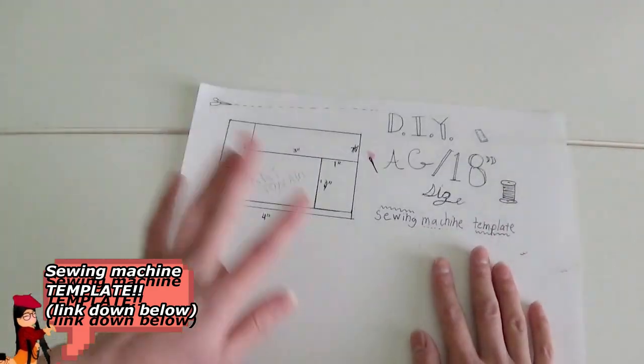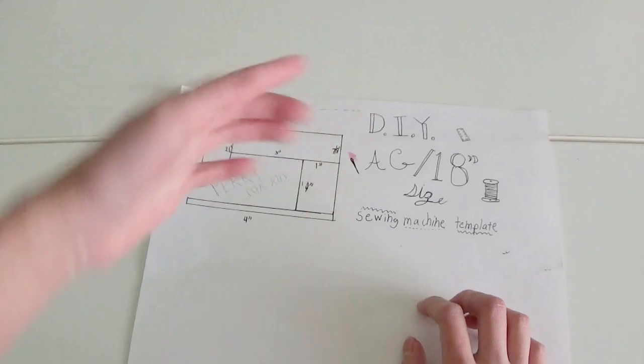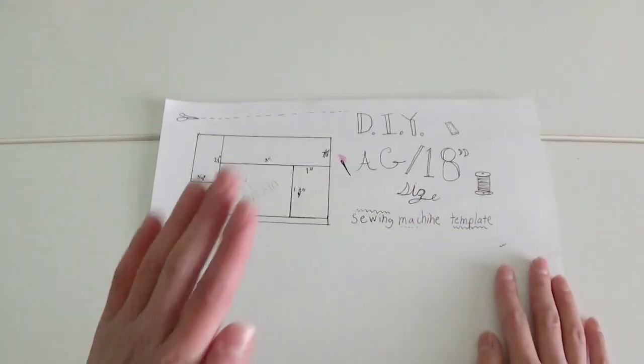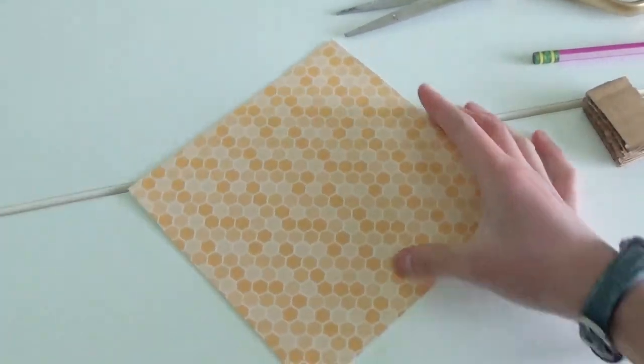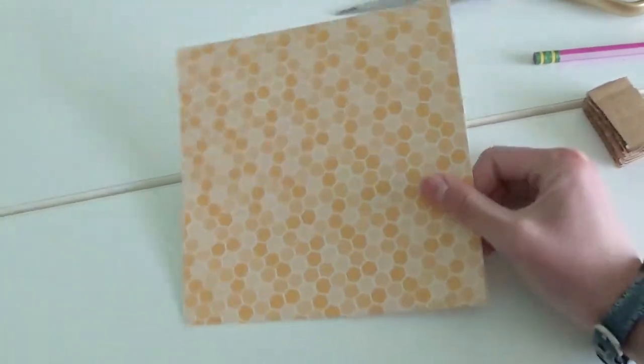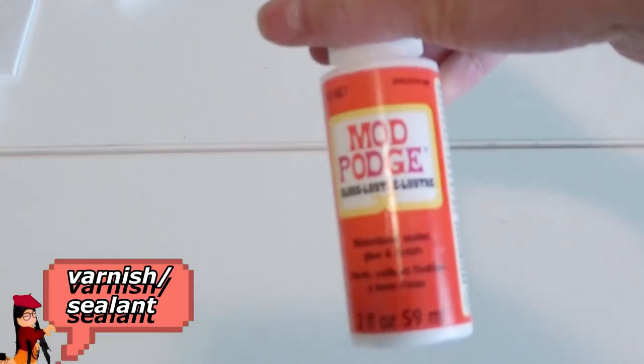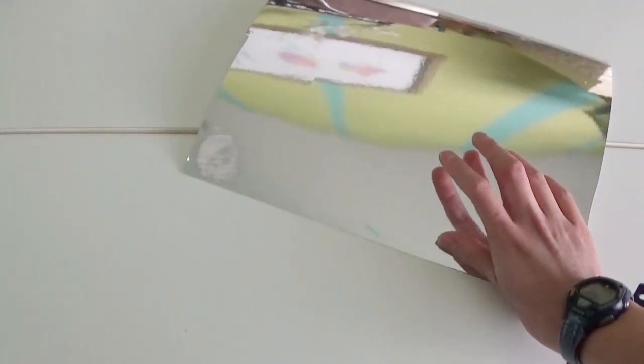This template that I made for the sewing machine, I'll link it in the description box down below, you can just print it off in the top right hand corner you'll see a little print sign if you're on a computer. Some type of decorative paper, I'm using this honeycomb pattern but you can use a solid color or a pattern, you'll see what I'm doing with this later. Mod Podge and this reflective silver scrapbooking paper, if you don't have this you can always just paint regular paper with silver craft paint.